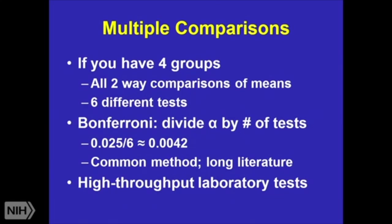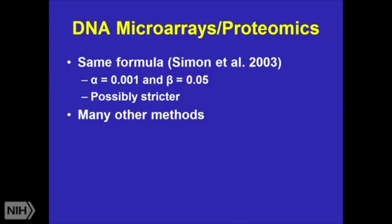The simple way people do it is the Bonferroni test — they divide their alpha by the number of tests. It's common, but it's super conservative. In some of your high-throughput laboratory tests, Ed Korn worked this out, and there were cases where it was physically impossible for them to have any statistically significant results after accounting for multiple comparisons. That's not an experiment worth running. This comes up a lot in microarray, proteomics, and other omics-type experiments. Many times people say just set your alpha and beta stricter. I tend to agree — set a really strict type 1 error level that you're going to adhere to and test everything against that. There are also family-wise error rates and other things, but just set strict thresholds up front and plan for that.